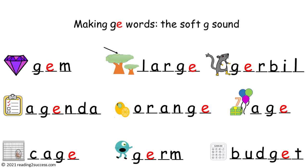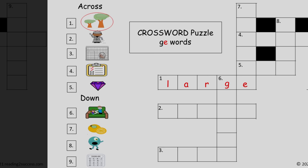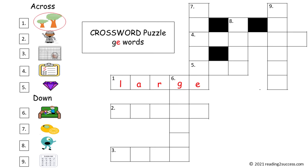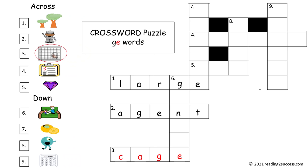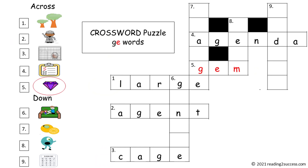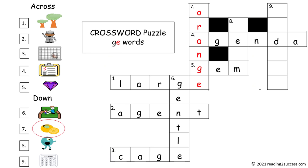And this is a completed example. A great way for kids to recognize, read, and learn to spell words is to complete a crossword puzzle — and they find this very fun. So we are going to do a crossword puzzle with G words. One across is large. Two across is agent. Three across is cage. Four across is agenda. Five across is gem. Six down is gentle. Seven down is orange. Eight down is germ. Nine down is budget. And this is the completed crossword puzzle.